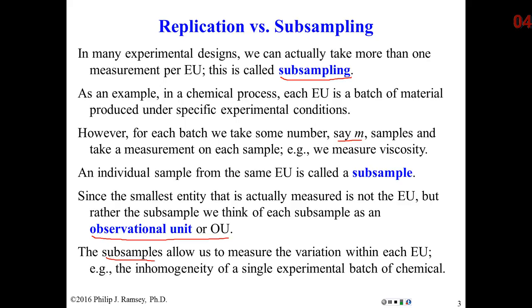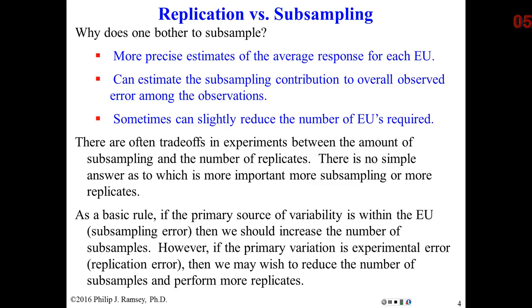In general, we typically assume the experimental units are homogeneous — in other words, they're all the same — but that's not always true. If you look at the surface of that steak, who says that the growing conditions for bacteria are uniform across the surface? Or, if you have a batch of chemicals, can we be certain that the physical characteristics of the chemistry are the same throughout the batch? When we take subsamples, they let us measure the variation or inhomogeneity within the experimental unit — we call this subsampling.